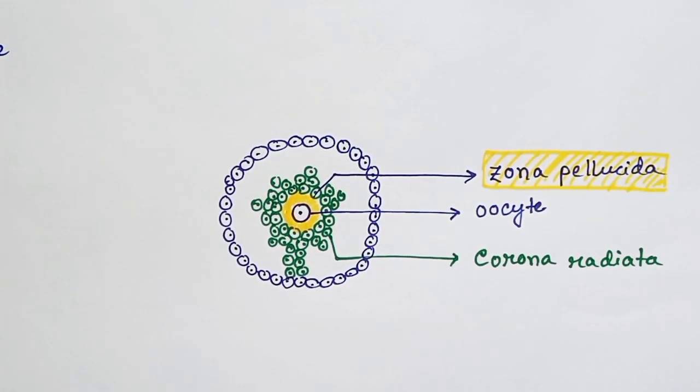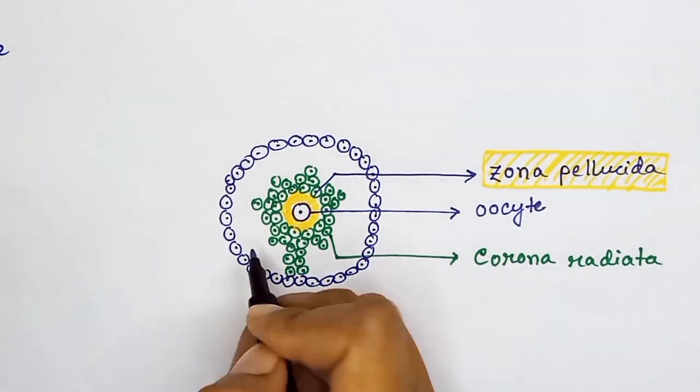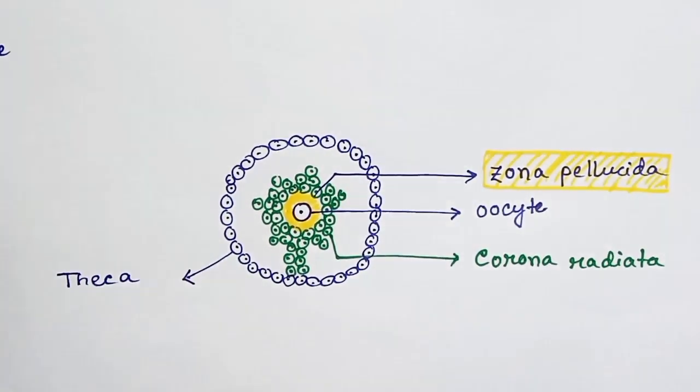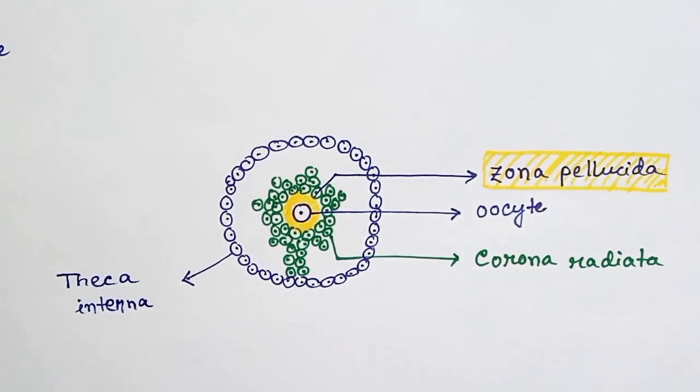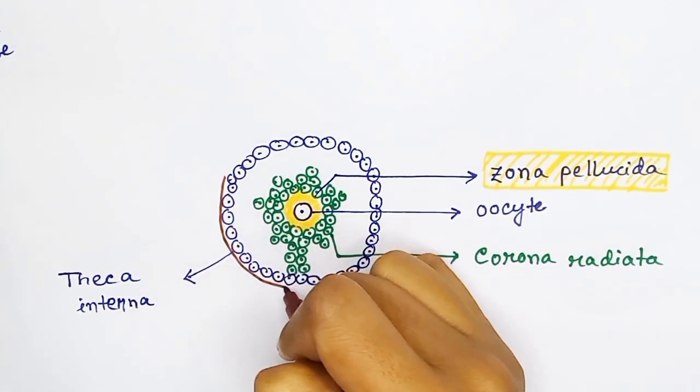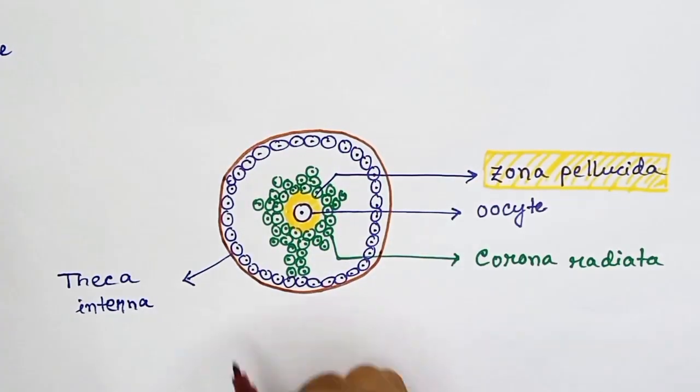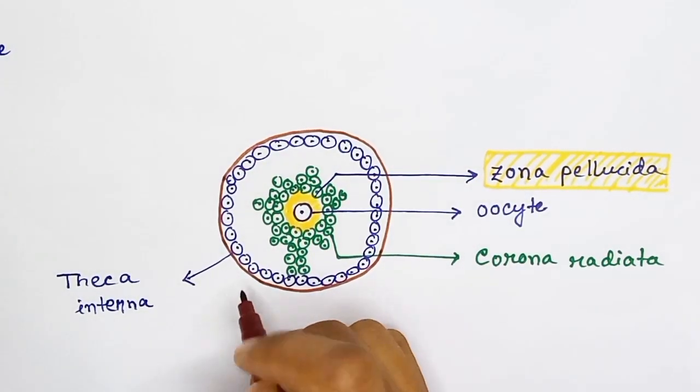Outside this antrum, which is shown in white space here, there is a layer made up of follicular cells. This layer is called theca interna. Outside theca interna, there is an extracellular matrix layer that is called basal lamina.